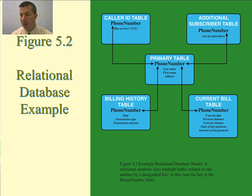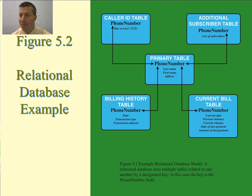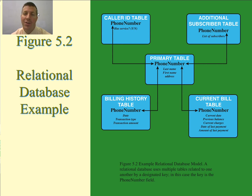From our textbook, here is an example of a relational database so you can see all of the tables provided are related to each other. They are all related by the phone number. In the primary table — probably called the phone table or customer table — the phone number would be the primary key, and it is going to be a foreign key in all of the other tables. It won't be unique in those other tables, but it will uniquely identify what row in the primary table is being referred to.